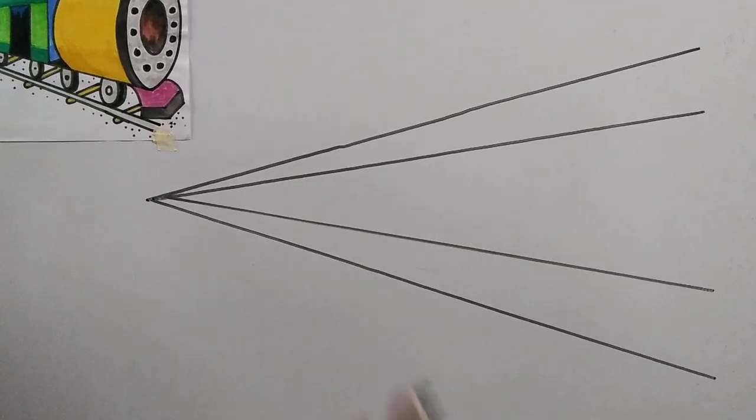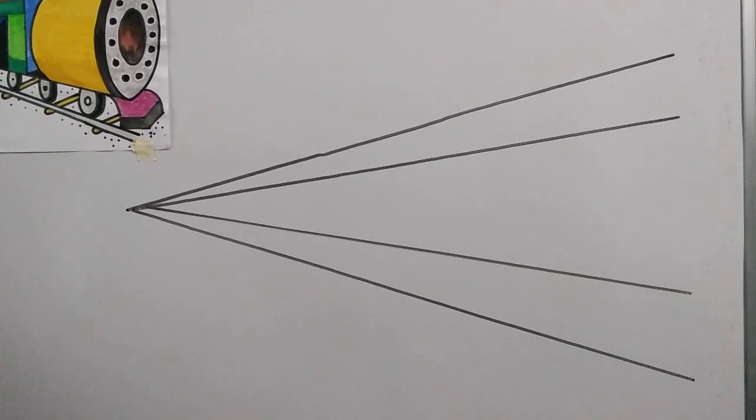Step No. 3. In the inner V, draw oval shape as shown.